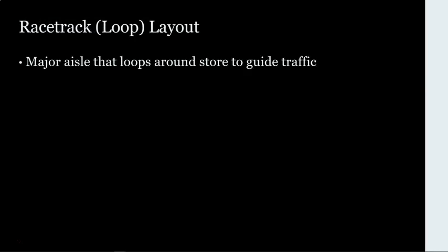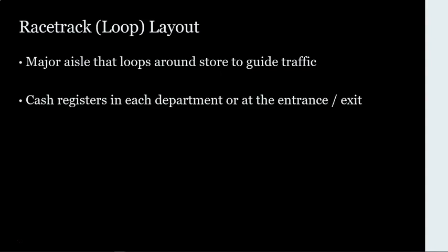The second layout is the racetrack layout, sometimes called the loop layout. It has a major aisle that loops around the store to guide customer traffic into different departments. The racetrack or loop layout can have cash registers or checkouts in each department, or at the front of the store near the entrance and exits, similar to the grid layout. Many department stores use the racetrack layout and have checkouts in each department.